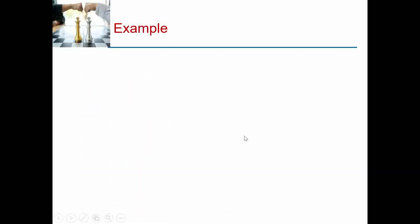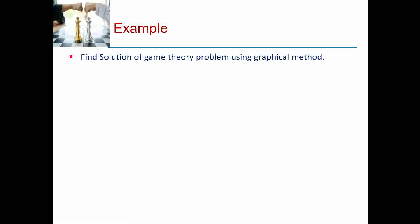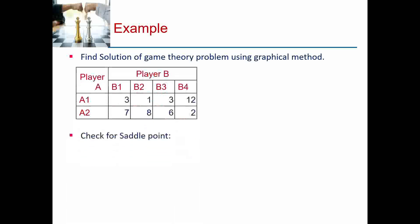We will directly go to an example. We have to find the solution for a game theory problem using the graphical method. The given problem has 2 strategies for player A and 4 strategies for player B, making it a 2×N matrix — specifically a player A matrix. So we have to use the maximin principle to reduce the game into a 2×2 matrix.